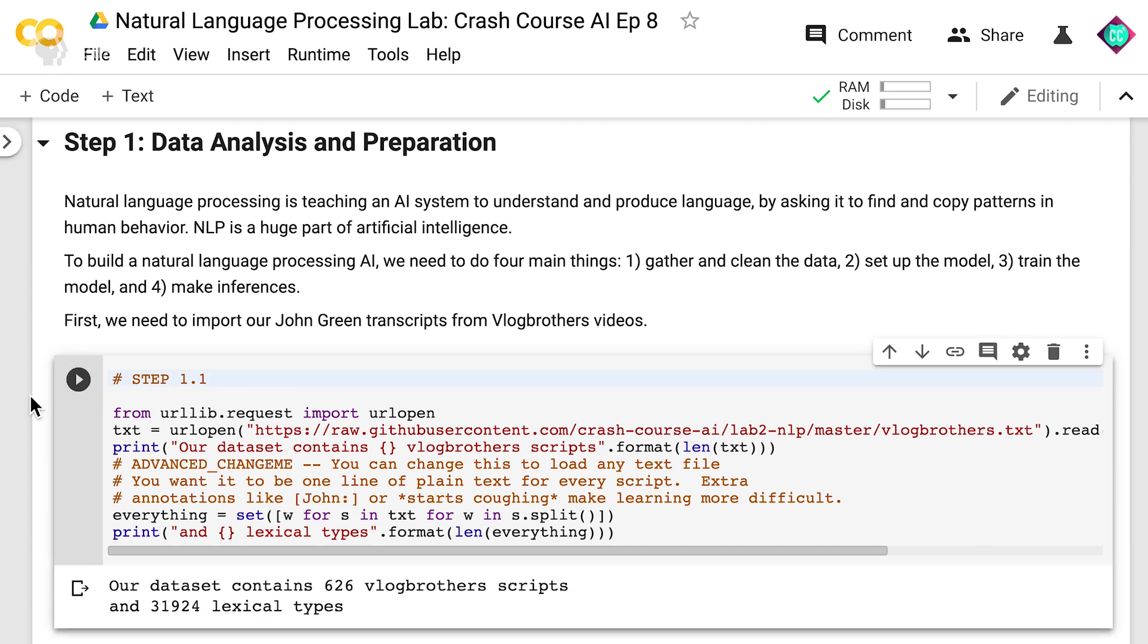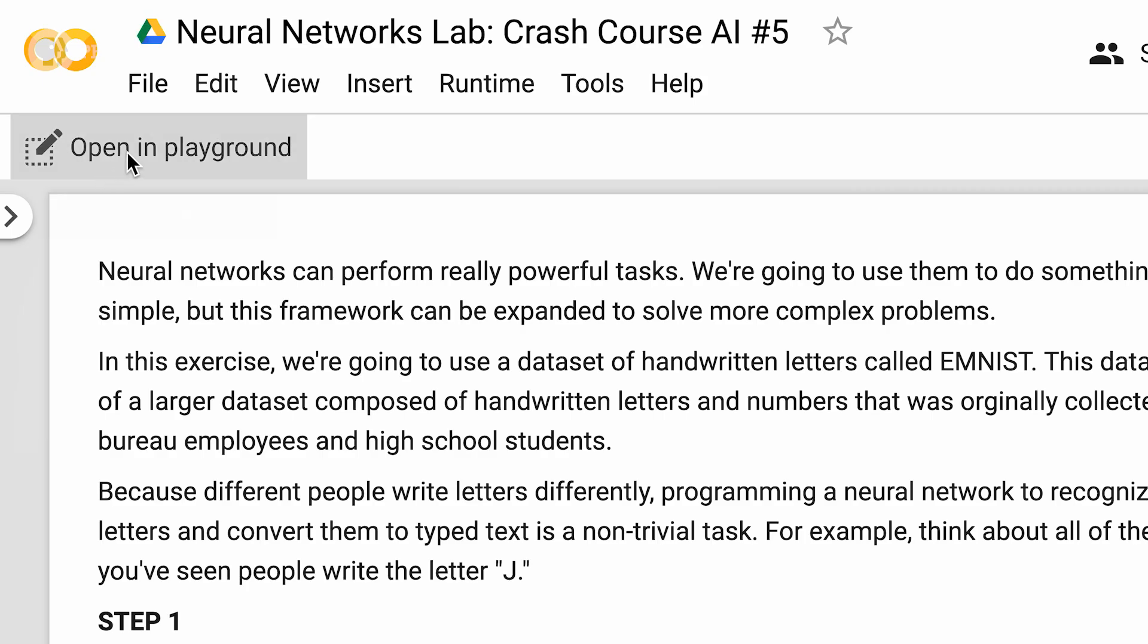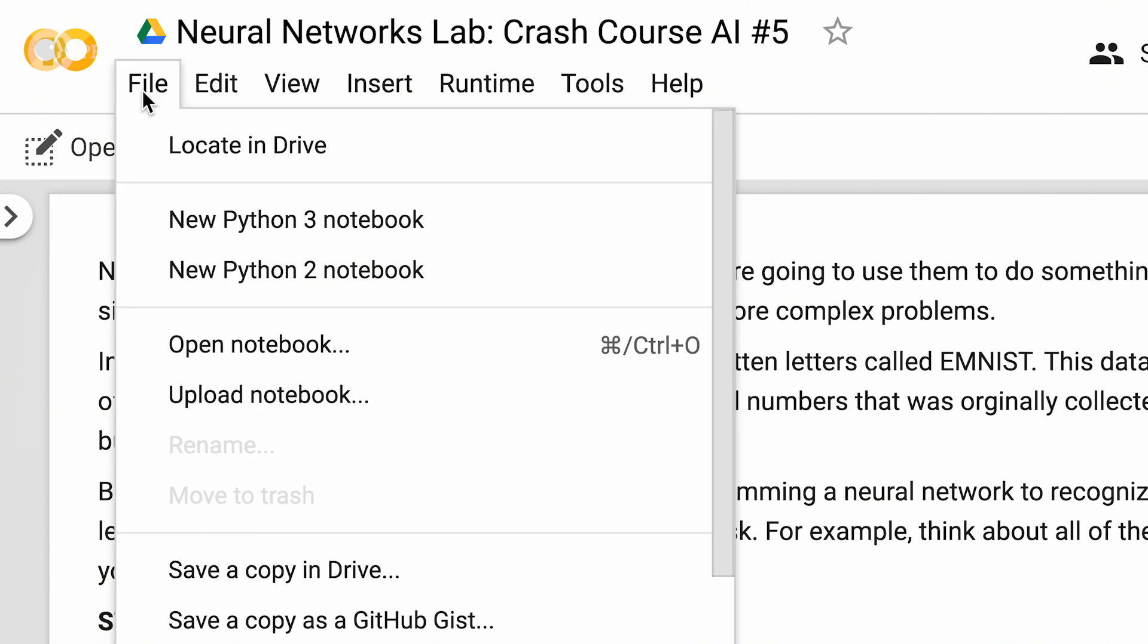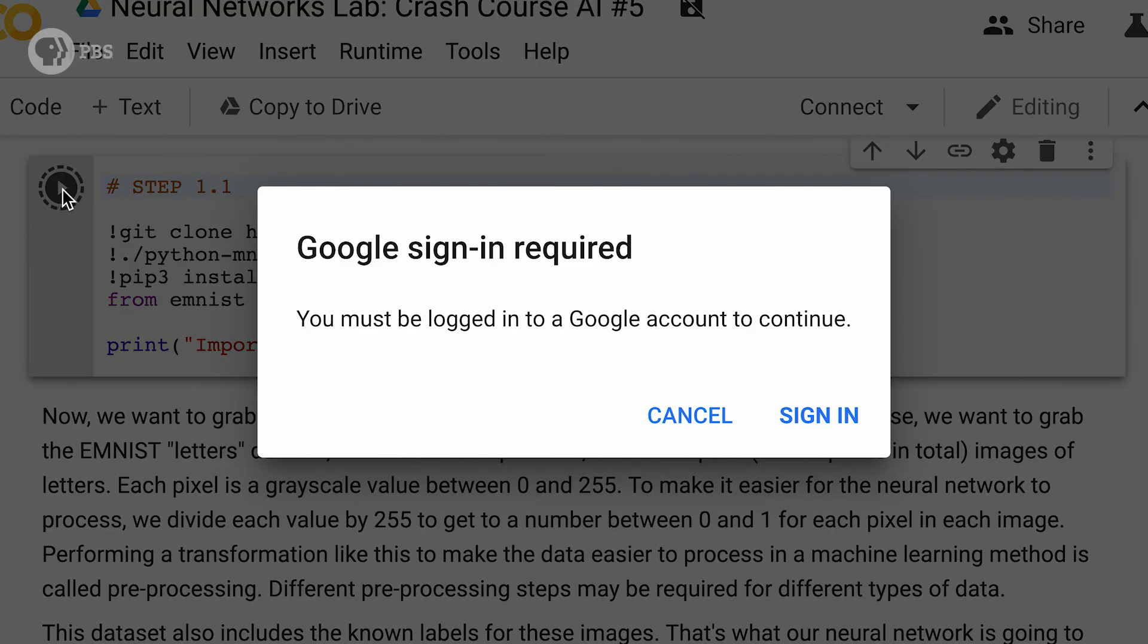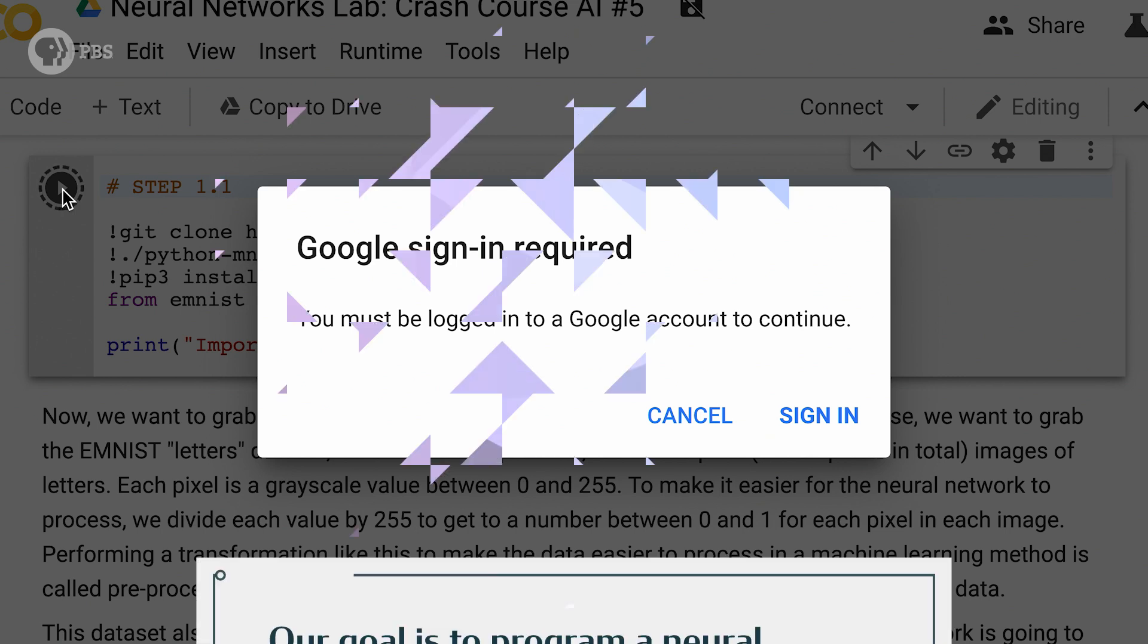These pieces of code build on each other. So, keep in mind that we have to run them in order from top to bottom, otherwise we might get an error. To actually run the code and experiment with changing it, you have to either click Open in Playground at the top of the page, or open the File menu and click Save a Copy to Drive. And, just FYI, you'll need a Google account for this.